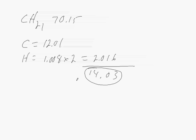Take this number here and divide it into the molecular weight that we're given. So we have 70.15 divided by 14.03. This gives us 5. We take our CH2 and multiply it times 5, which would give us C5H10.